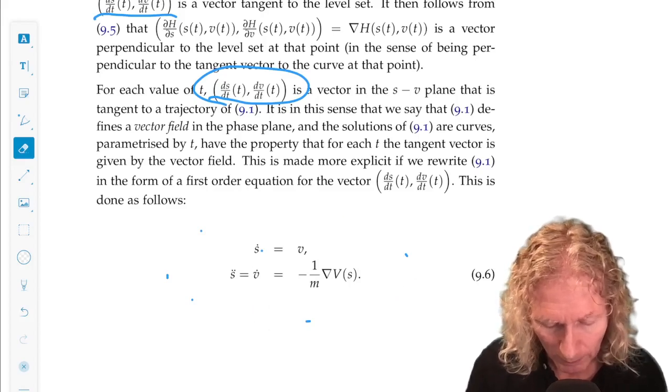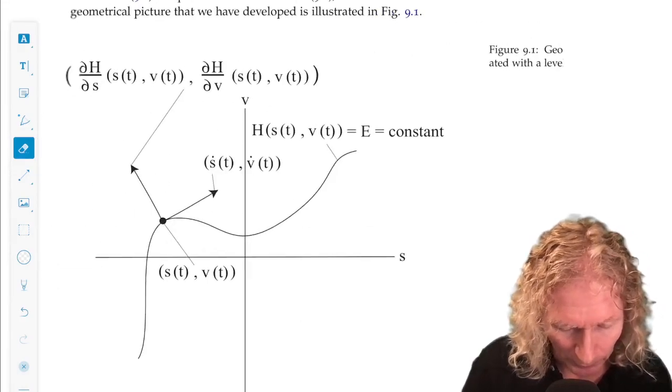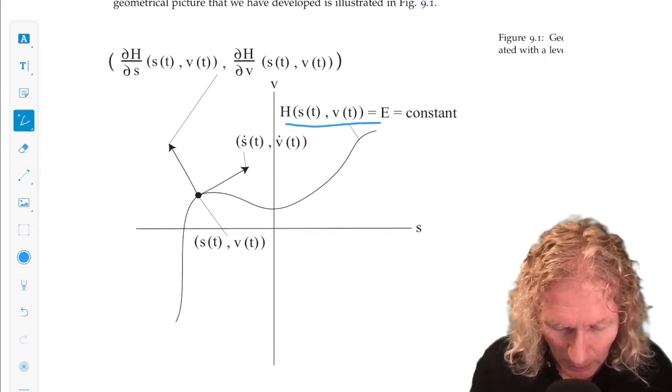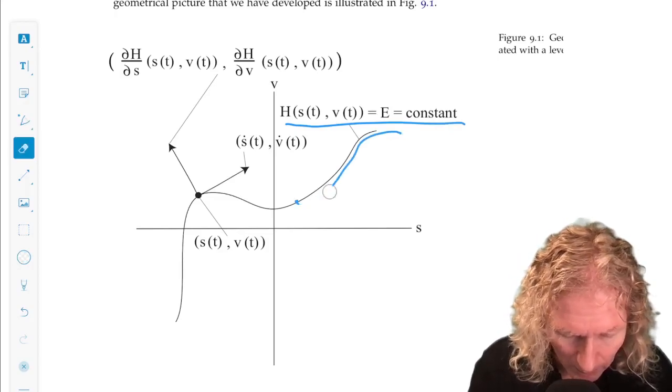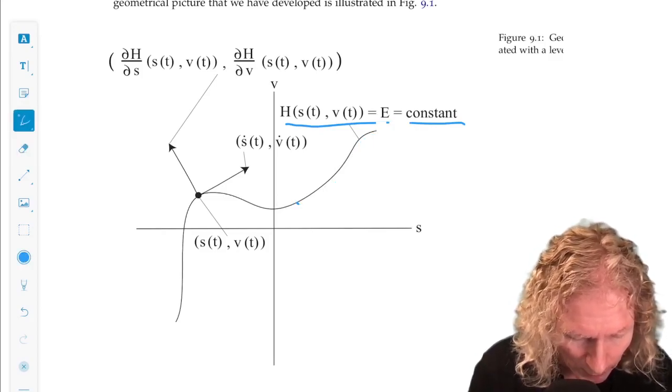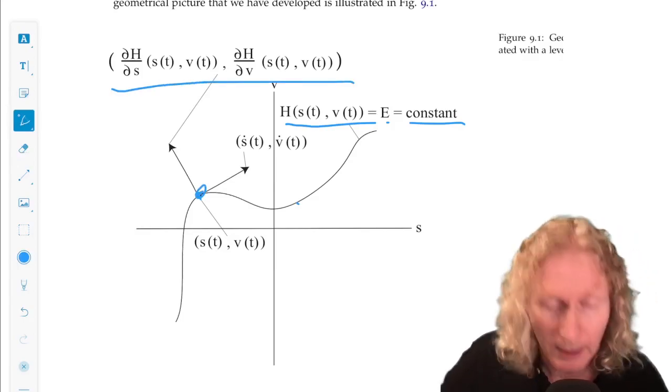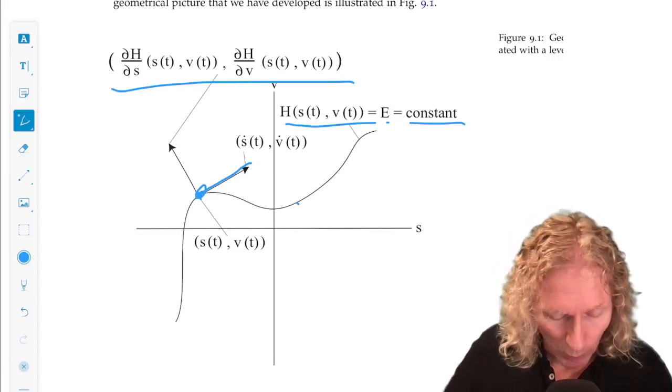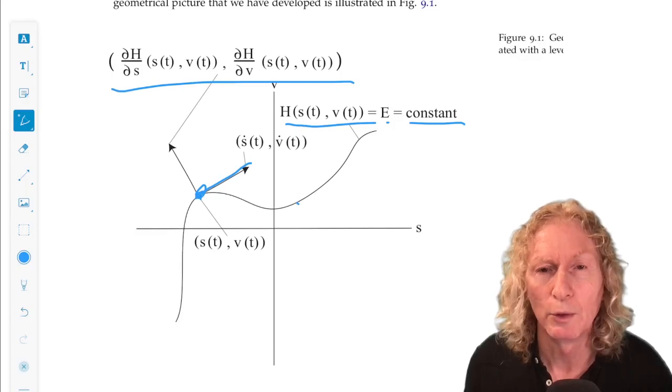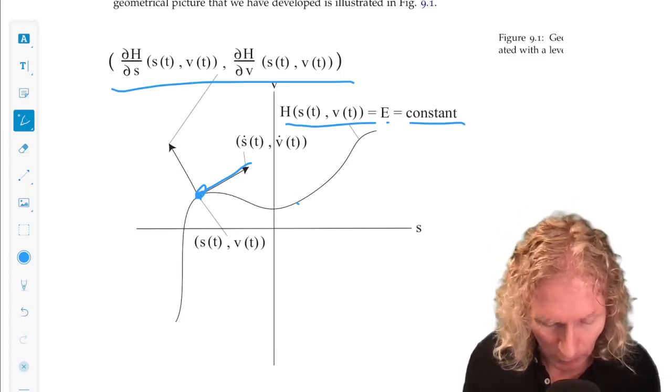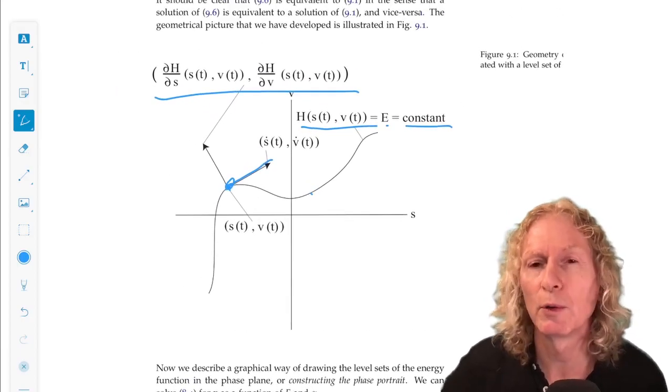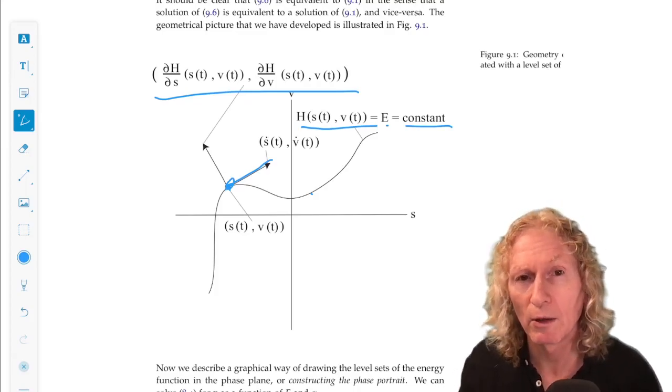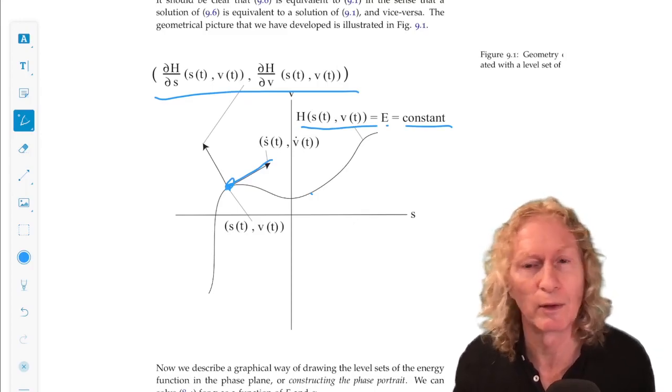And the picture that we have for this is the following. So learning this picture is very important. This is a level curve, a piece of level curve. And we take a particular point on the level curve. The gradient is perpendicular to the level curve. That means it is perpendicular to the tangent vector of the level curve at that point, s dot v dot, which is a solution of Newton's equation written in first order form as a vector field on the phase plane. So this is all pretty simple geometry, but it's very important to understand this. The solutions are tangent to the level curves. That means they stay on the level curves.